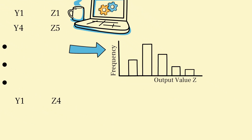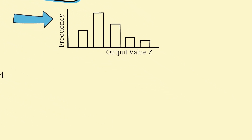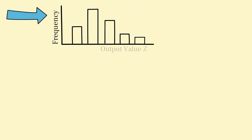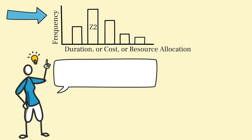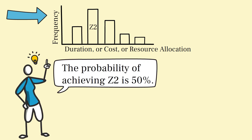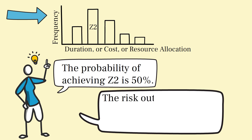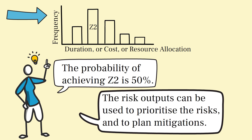As the simulations progress, we calculate key project metrics, such as completion time, total cost, or resource allocation, for each generated outcome. This helps us assess the likelihood of meeting project targets and identify high-risk areas that require mitigation strategies.